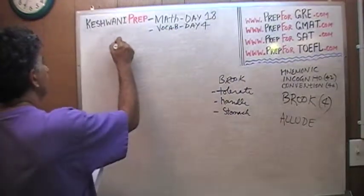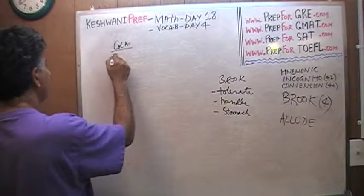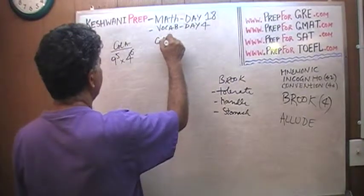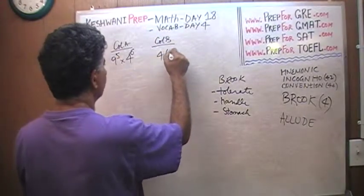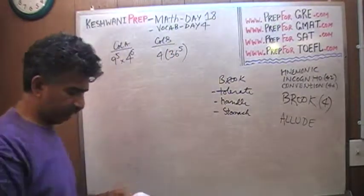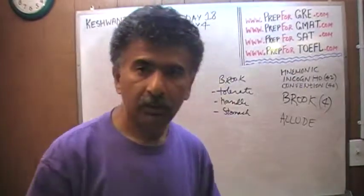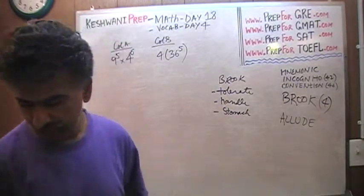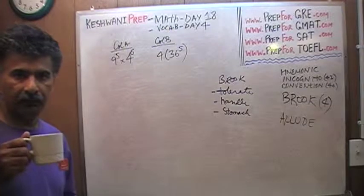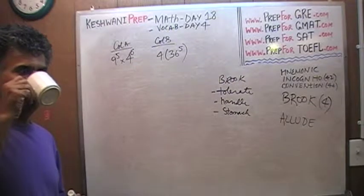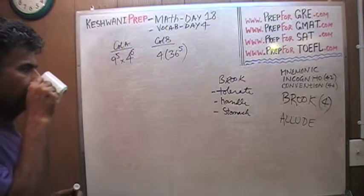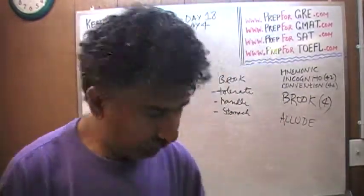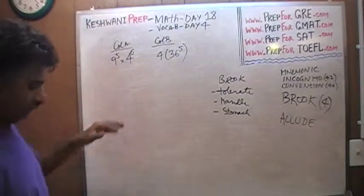The problem is this: Column A — 9 raised to 5 times 4 raised to 6 — versus Column B — 4 times 36 raised to 5. This is very similar to the problem we just finished. Pause the video, use the same logic from the previous question, and see if you can do it yourself. Then continue when you have the answer. Again, there are two ways — manipulate Column A to look like Column B, or vice versa. Let's do Column A first.